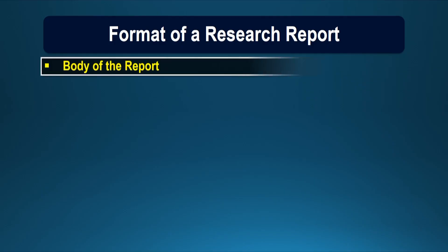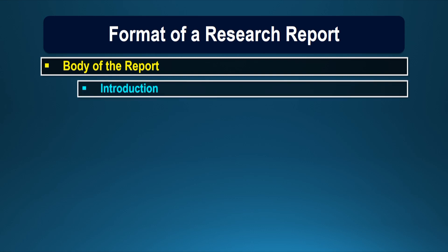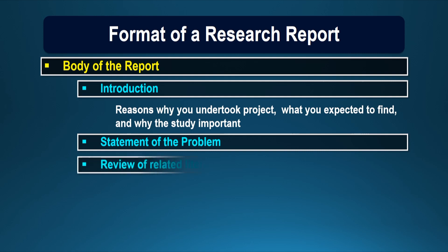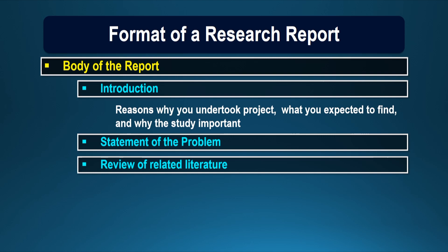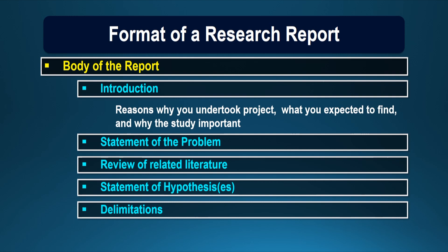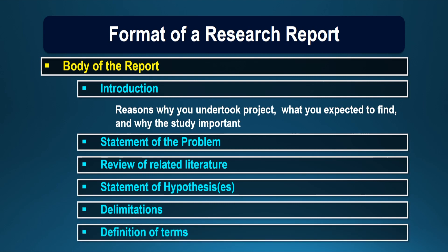Now let us come to the body of the report. The first chapter is about the introduction — it describes the reasons why the investigator undertook the project, what he or she expected to find, and why the study was important. It is followed by the statement of the problem, the review of literature, and a summary of that review. Based upon the review of literature, the investigator formulates the hypothesis. The research report also includes the delimitations of the study, and the researcher has to give the operational definition of the terms used in the research study.